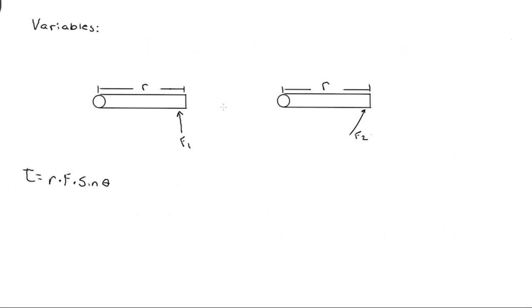We'll now be going over our practice problem for torque. To tighten a lag bolt, a 29 newton force is applied at a 90 degree angle to a wrench, 0.18 meters from the center of the bolt. If the angle between the wrench and the force is changed to 50 degrees, what magnitude force is necessary to tighten the bolt with the same torque?